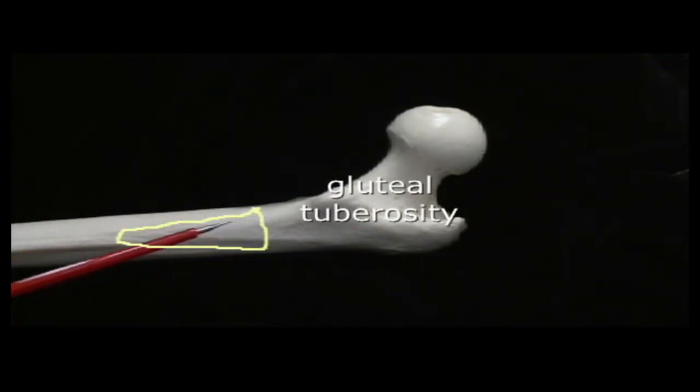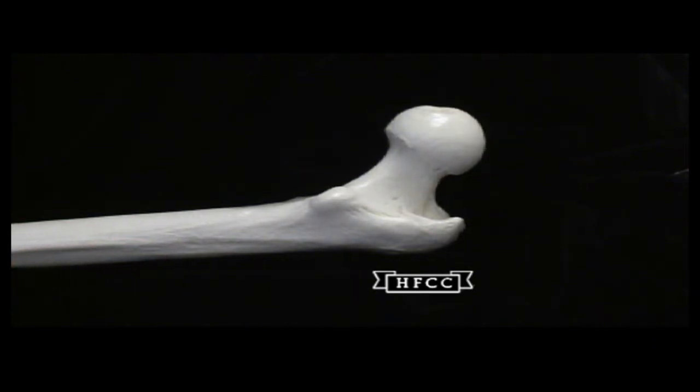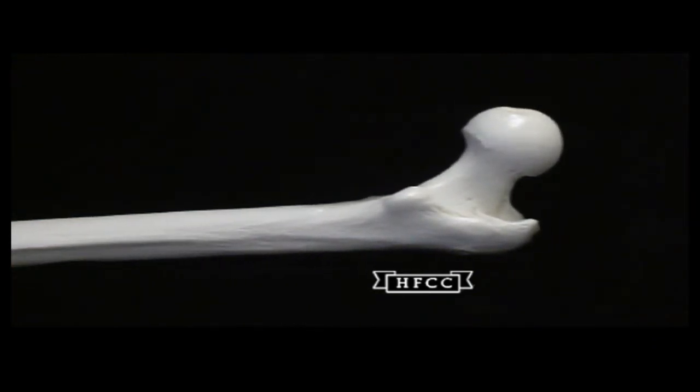And then the gluteal tuberosity. This ridge of small bumps there will have the gluteal muscles attaching to it, like the gluteus maximus in that zone. And then that gluteal tuberosity.